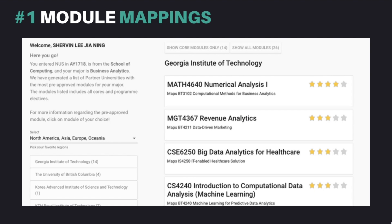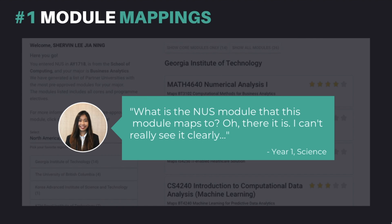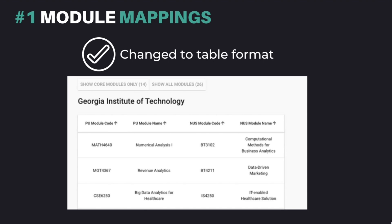Our first place feature is the module mappings by university. This feature was praised by users for significantly reducing their time taken to do their module mappings. Previously, users estimated the time taken for module mappings as 20 hours. With this feature, they estimate their time taken to be reduced to 5 to 10 hours. Users also liked that modules they have previously taken are not included in the list, so that they can focus only on the modules they are required to take. However, users found that the layout of the modules was not intuitive and it was not clear what NUS module the partner university module maps to. Thus, we decided to change the layout to a tabular form, clearly stating the partner university module code and name and the NUS module code and name.